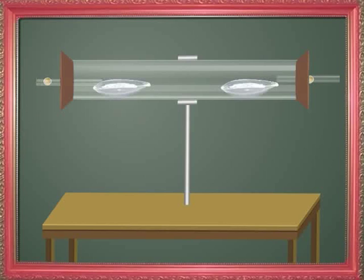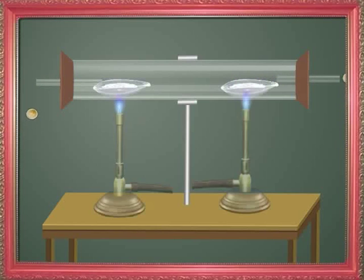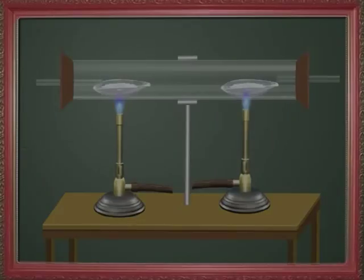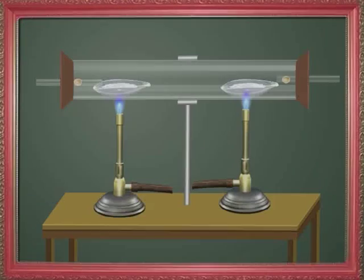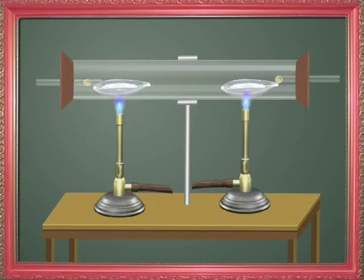Now start by passing hydrogen gas into the tube till all the air in the tube is displaced. Then subject the area where the porcelain boards are placed to heat. Please be very careful when you conduct this experiment because hydrogen catches fire easily, so while heating the combustion tube you should take utmost care.